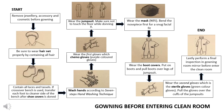Gowning before entering the clean room: Remove jewelry, accessories, and cosmetics before gowning. Be sure to wear a hairnet properly by containing all hair. Contain all laces and tassels by donning shoe covers — if a crossover bench is used, transfer each foot to the cleaner side. Next, wash hands according to the seven-step hand washing technique. Wear the first glove, which is the chemo gloves, then wear the jumpsuit — make sure not to touch the floor while donning it. Next, wear the mask and bend the nose piece for a snug fit. Wear the boot covers, put on boots, and pull them over the legs of the jumpsuit. Wear the second gloves, which are the sterile gloves, pulling them over the cuffs of the jumpsuit. Lastly, perform a final inspection in the gowning room mirror before entering the clean room.